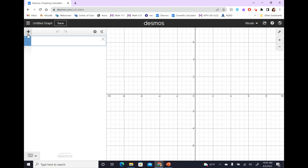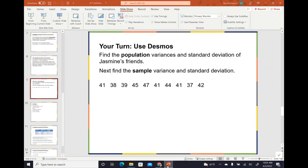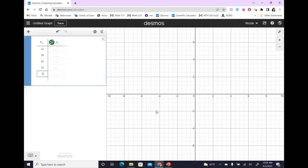All right. And the first thing we're going to do is we're going to go ahead and put this data into Desmos. And the way we're going to do that is we're going to go to the plus sign, and we're going to choose table, and we're going to type our data in the X1 column. So the numbers are 41, 38, 39, 41, 38, 39, 45, 47, 41, 44, 41, 37, and finally, 42.